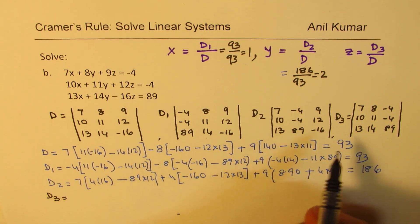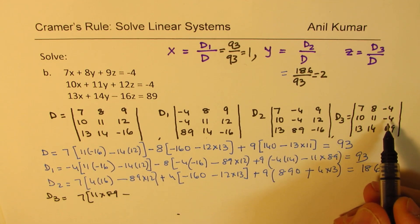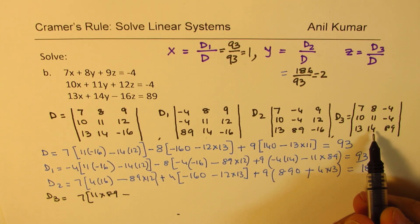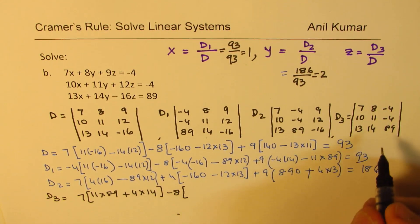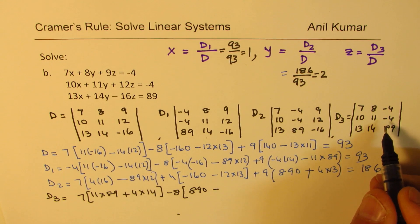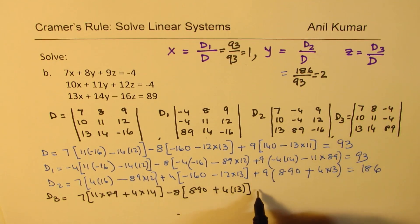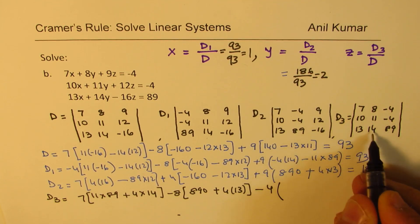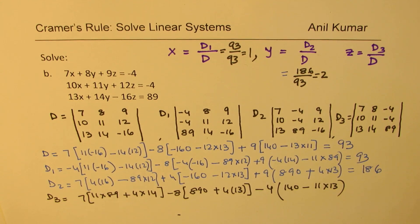Let's calculate D3 now. So, D3 will be that 7 times, let's rewrite, 7 times, 11 times 89, minus, minus 4 times 14. So, it becomes plus 4 times 14. And then, we have -8. So, sign alternates. 10 times 89. This is 89. So, 890 minus, minus and minus becomes plus, 4 times 13. And then, minus 4, minus 4 times, 10 times 14 is 140, minus 11 times 13. So, that's what we need to calculate now.